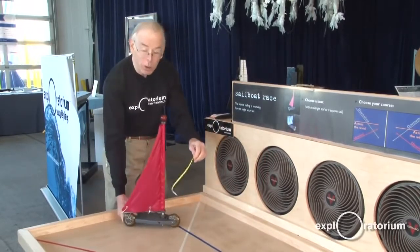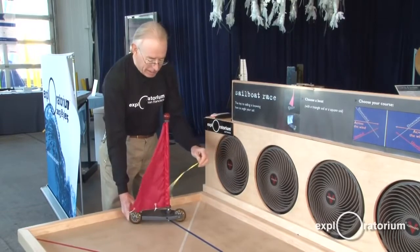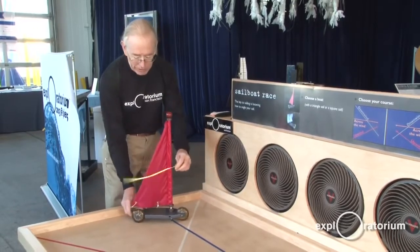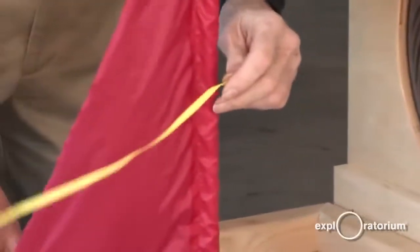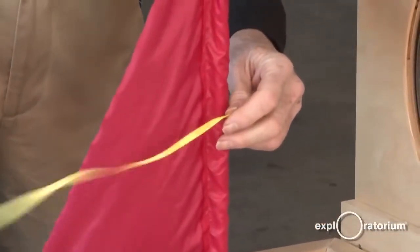Well, if we track what the wind is doing, it comes into this sail, and when the sailor sets the sail right, the wind curves around the sail, on the inside and the outside.